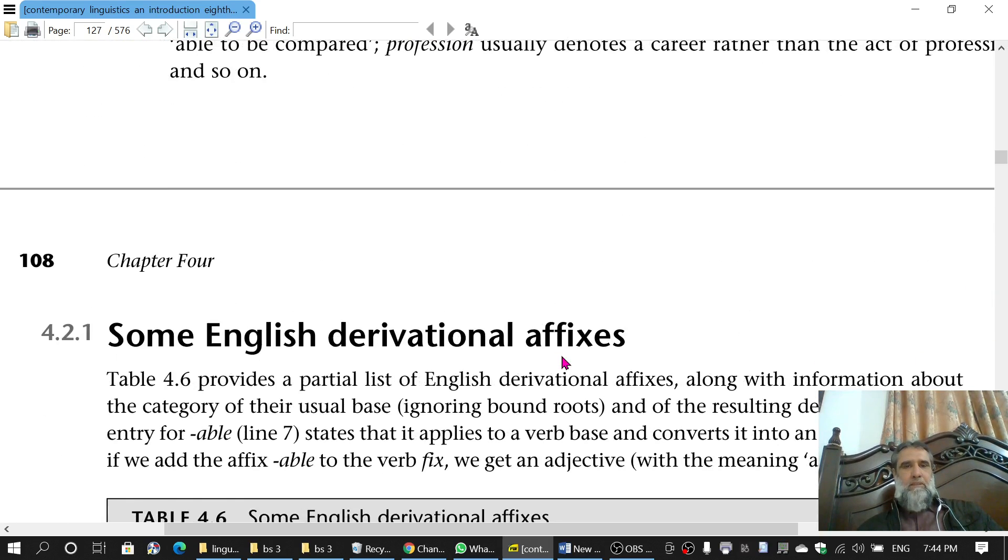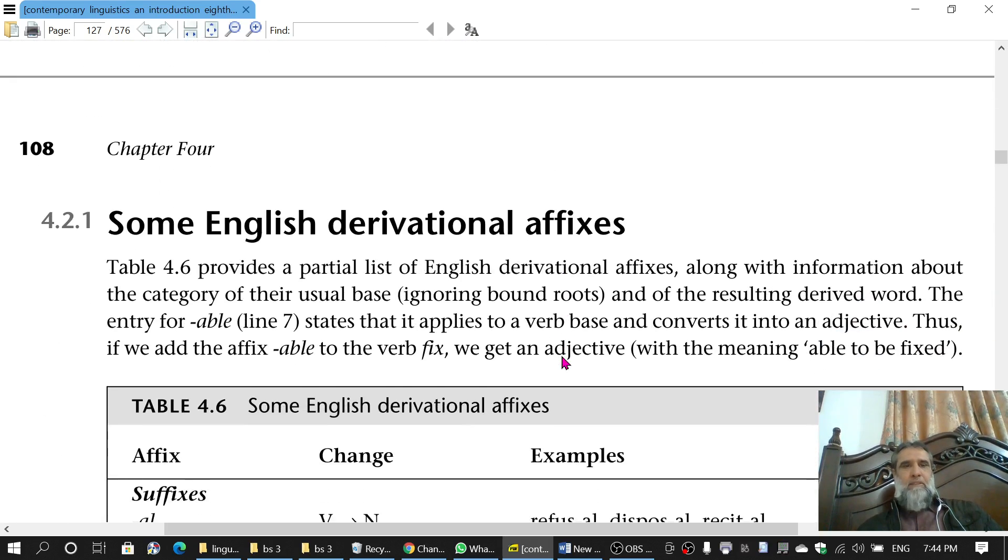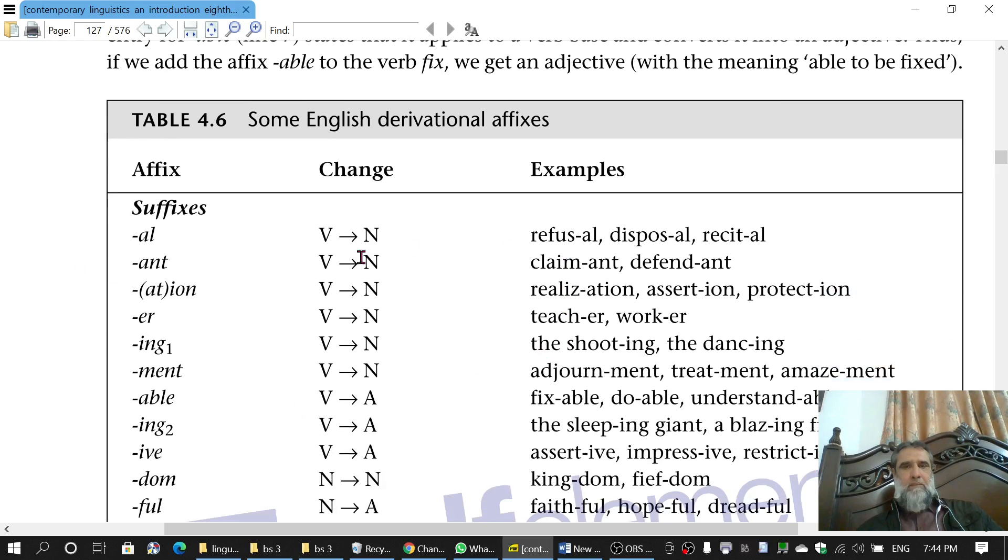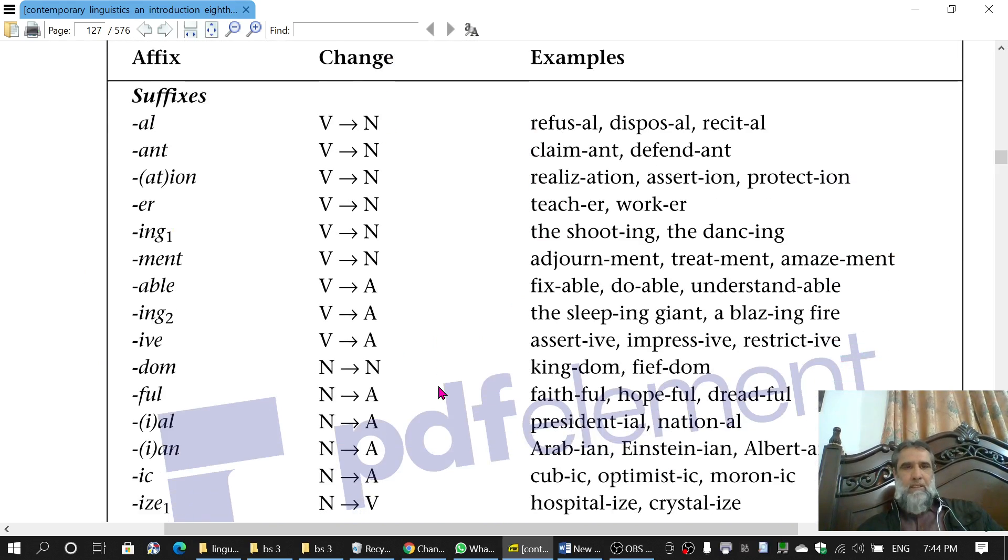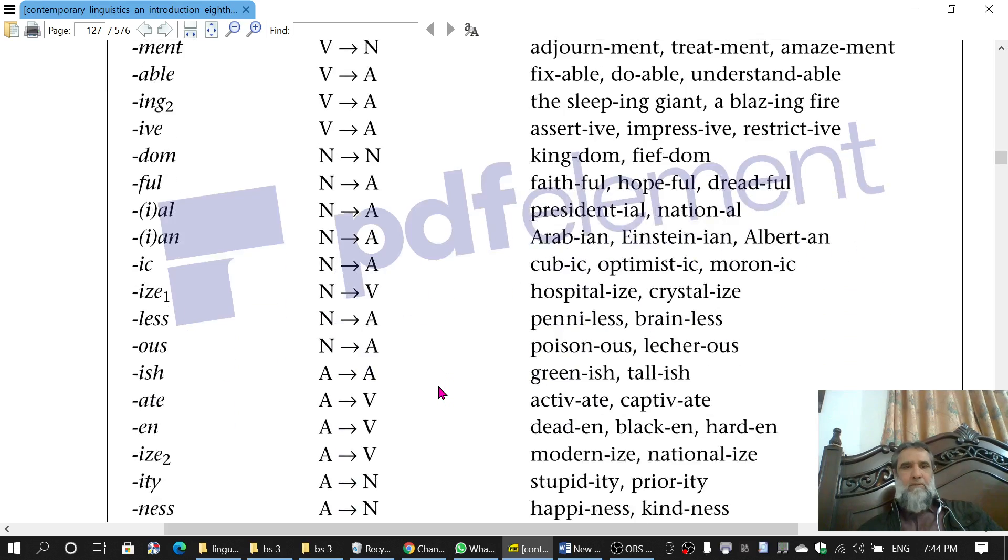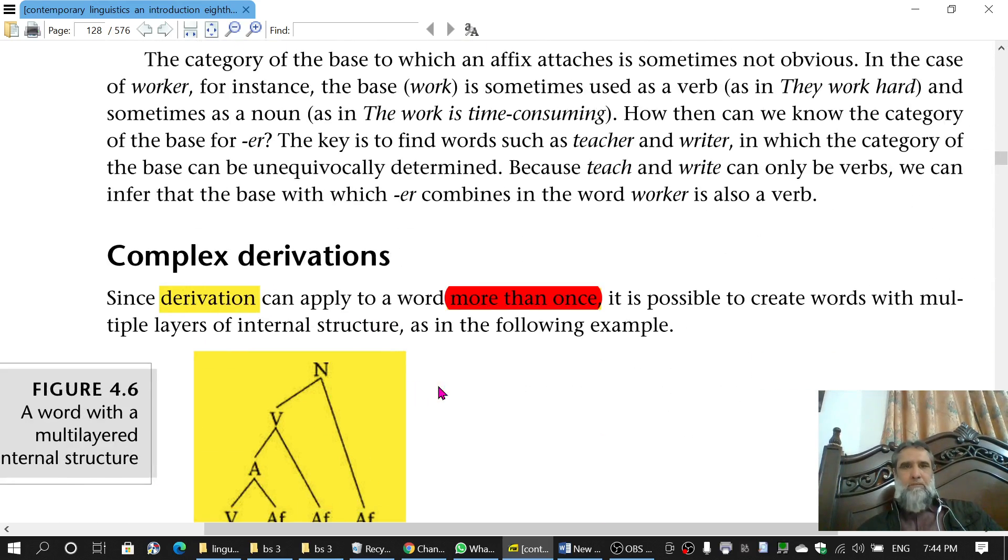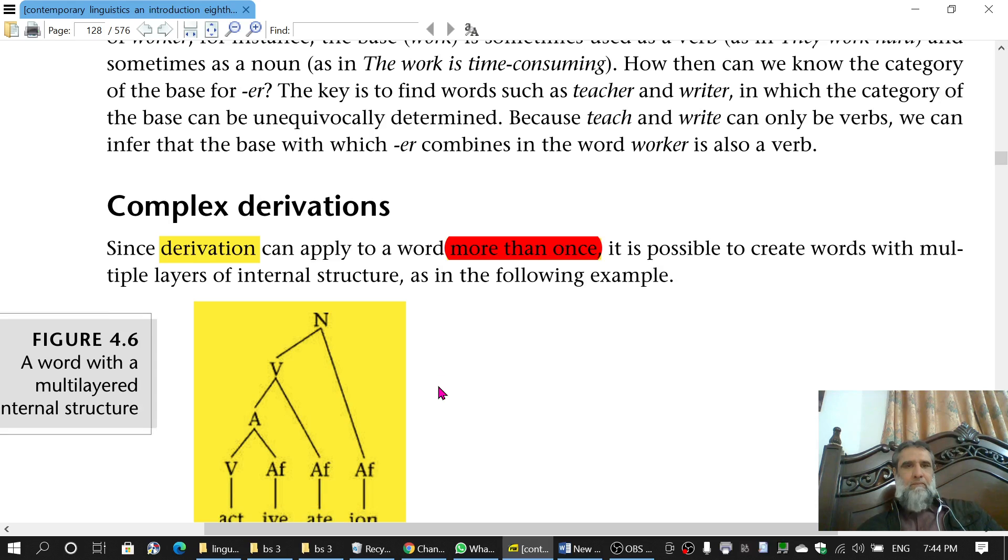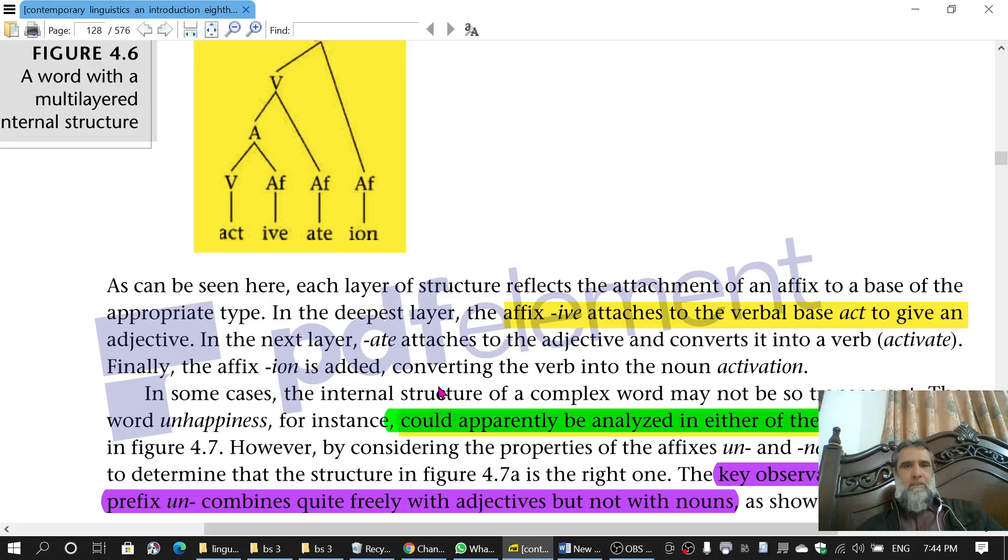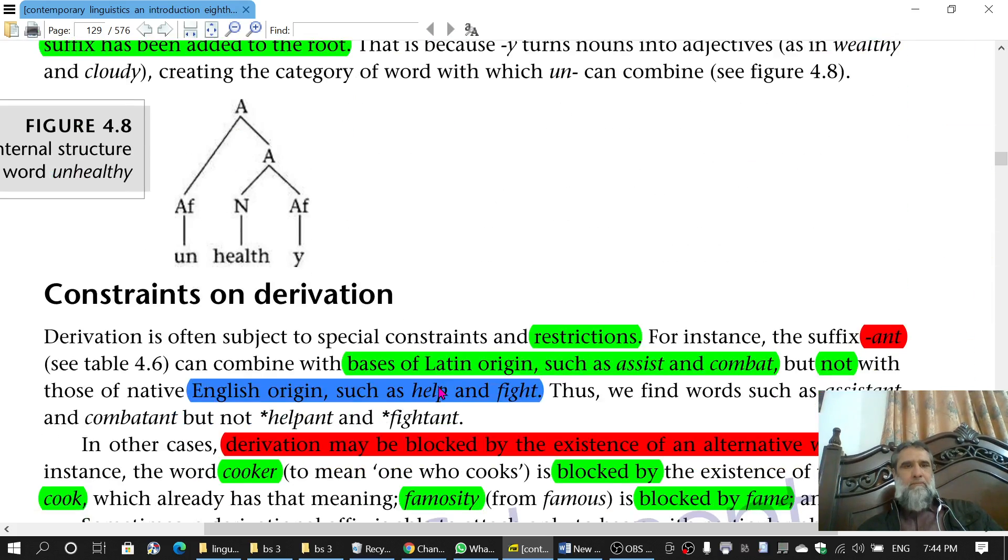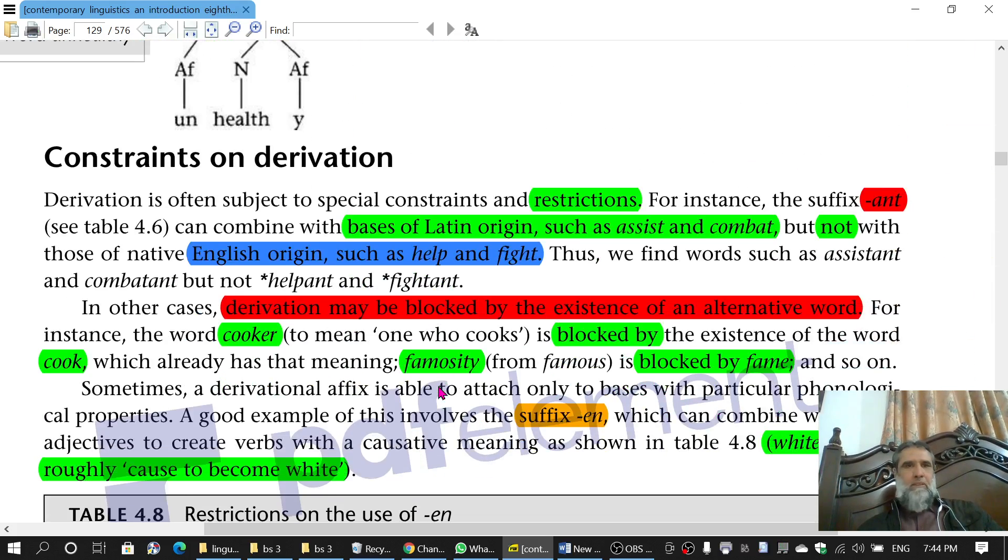Then we talked about derivational affixes. I didn't say much about these. If you want to memorize them you can learn some of them. They are not very important from examination point of view. Then we discussed complex derivation and now we will discuss constraints on derivation.